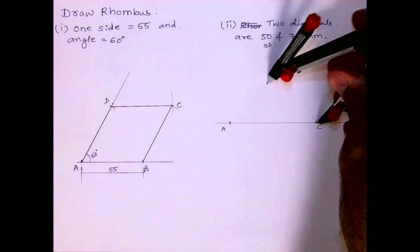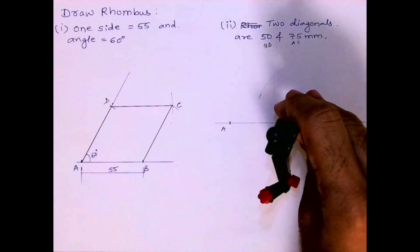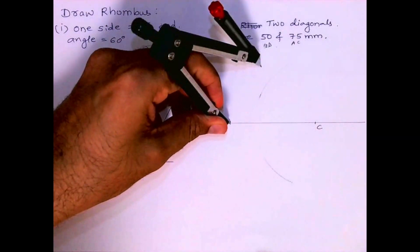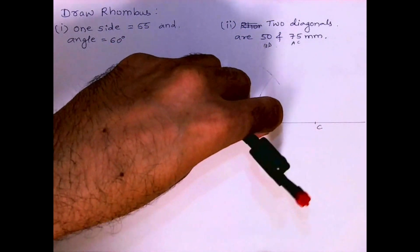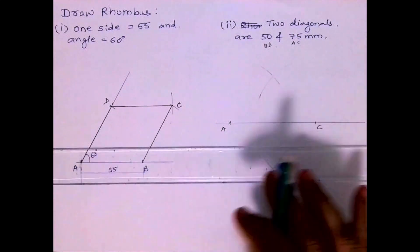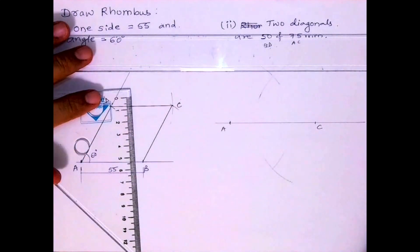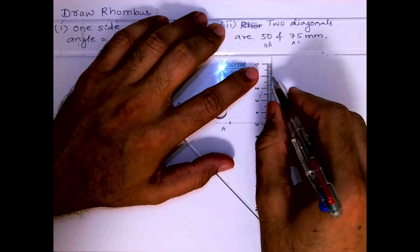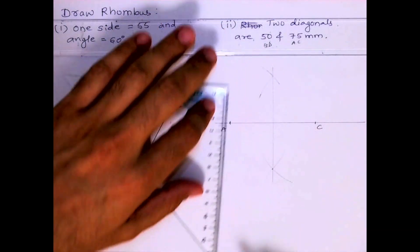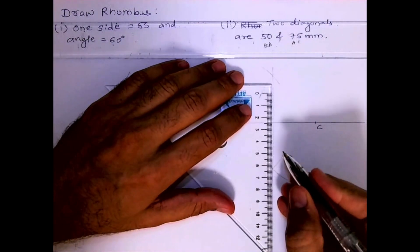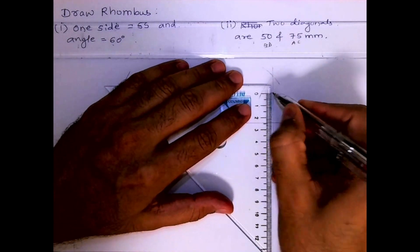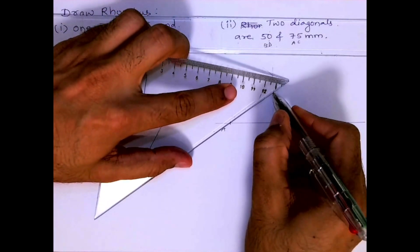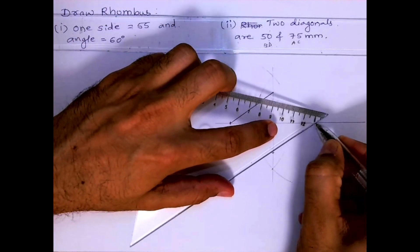See, this is what we will do: we will bisect AC. Now what we will do: 50mm, right? So 25 up, 25 down. You'll get point B and D, and when you join you will get the rhombus.